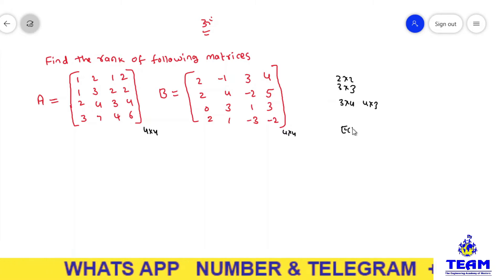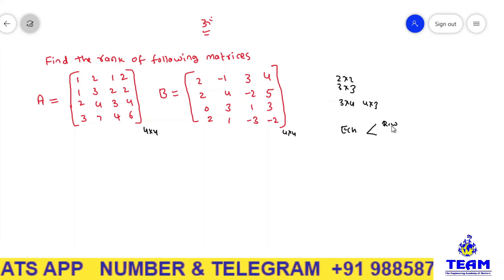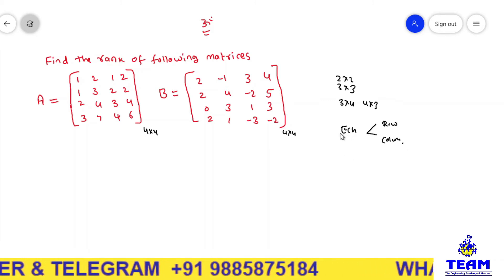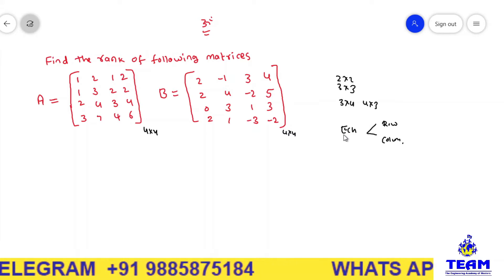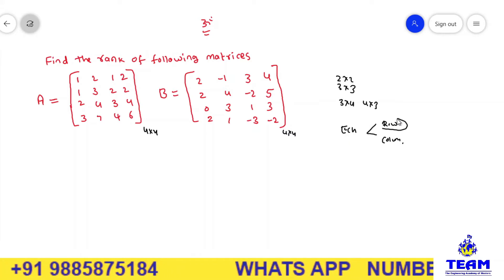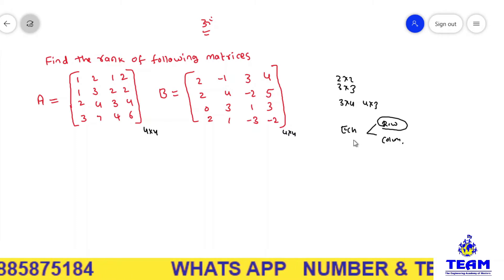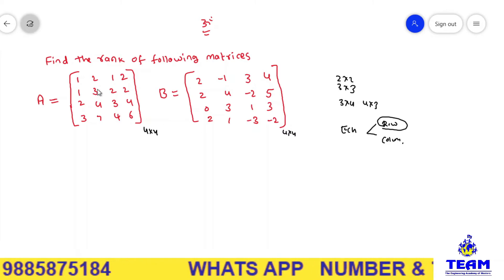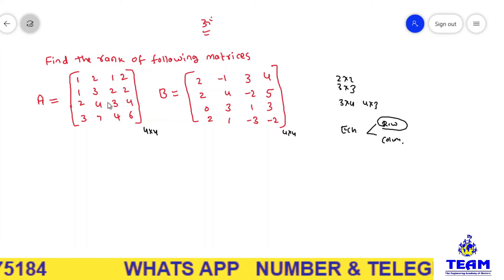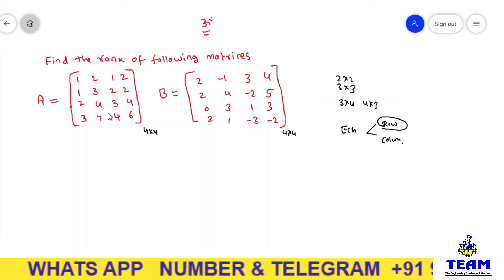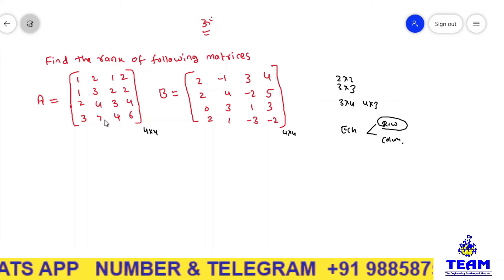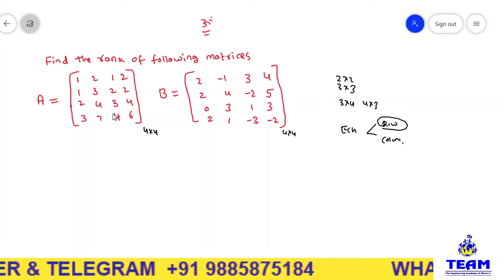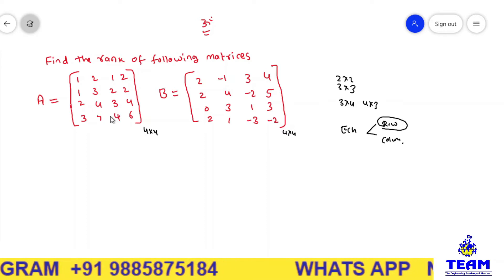In the echelon form we have two types: one is row echelon form, another one is column echelon form. In the row echelon form we apply only row operations; in the column echelon form we apply only column operations. Many authors use only row echelon form, so in this video we are applying elementary row operations. After applying them, the elements below the diagonal become 0 — that is an upper triangular matrix.